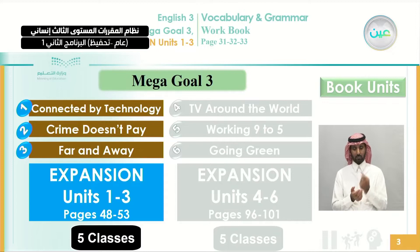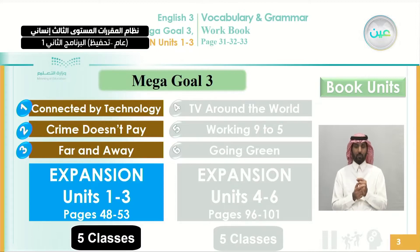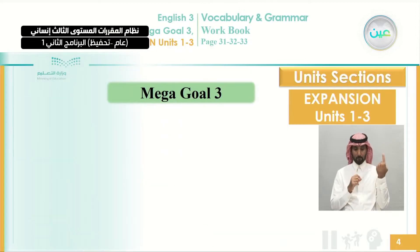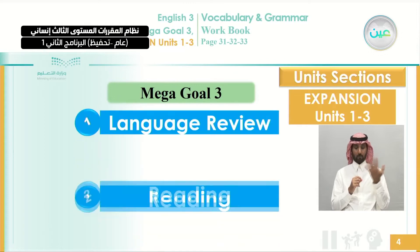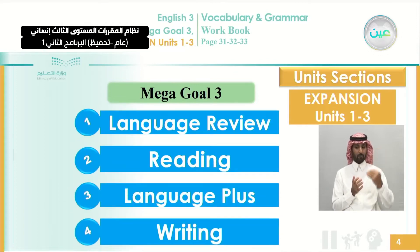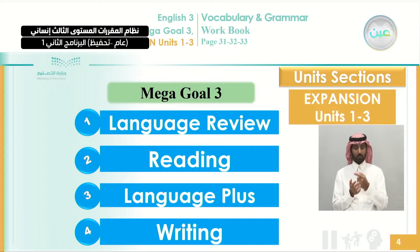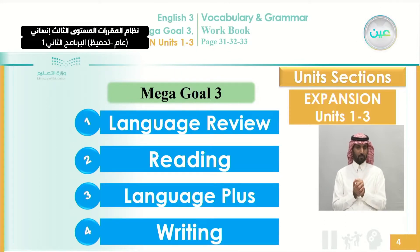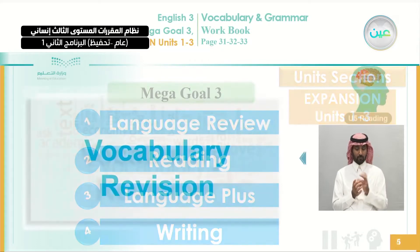We're going to do some exercises from the workbook and review some contextualized words from the reading and writing we studied in our previous lessons. We are at the expansion unit 1, 2, 3. The expansion unit has four sections: language review, reading, language plus, and writing. Today, we're going to study vocabulary and grammar.